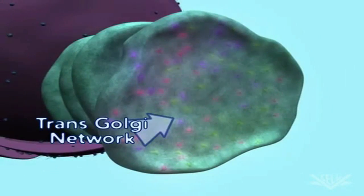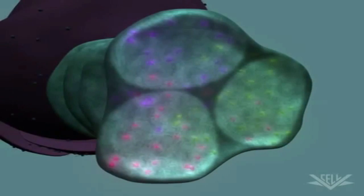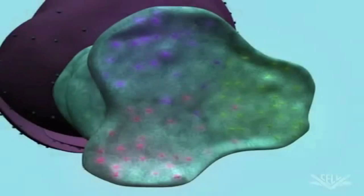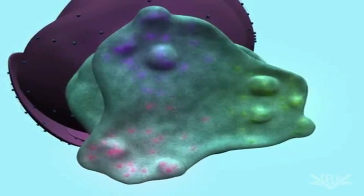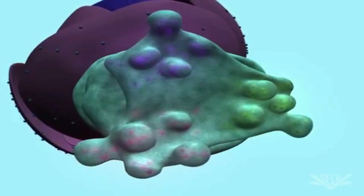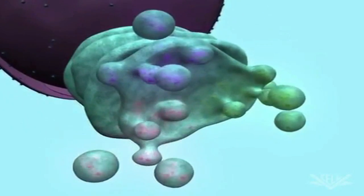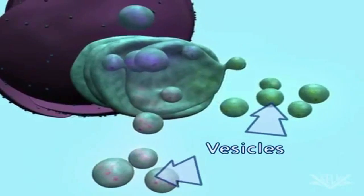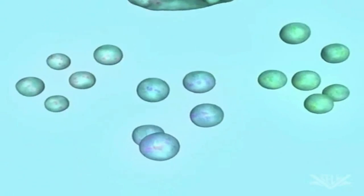Proteins are sorted within the trans-Golgi network. Proteins with the same target sequence are destined for delivery to the same location. The trans-Golgi network then buds off into vesicles, which migrate to their target location. These locations include internal organelles such as the lysosome, the digestive organelle of the cell. The vesicles can also be targeted to the cell membrane, where the targeted protein can be released from the cell for delivery elsewhere in the organism.